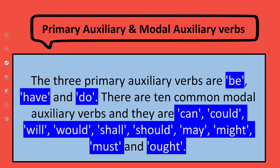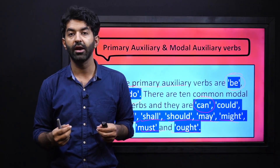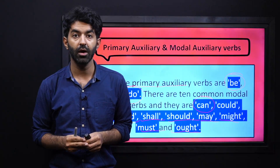Let's talk about primary auxiliary and modal auxiliary verbs and see the difference between them. There are three primary auxiliary verbs and they are: be, have, and do. There are 10 common modal auxiliary verbs and they are: can, could, will, would, shall, should, may, might, must, and ought to. These are our modal verbs. They have a different function and a different purpose from the primary auxiliaries.